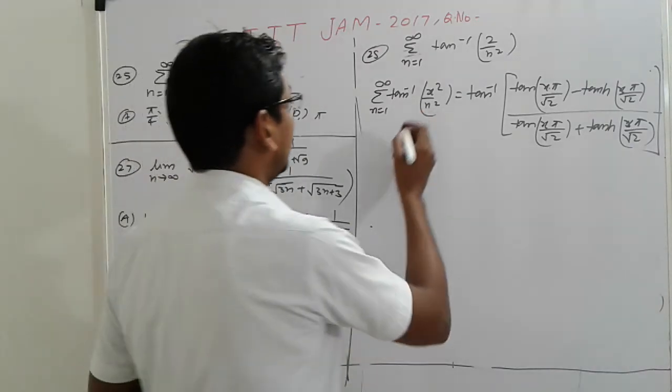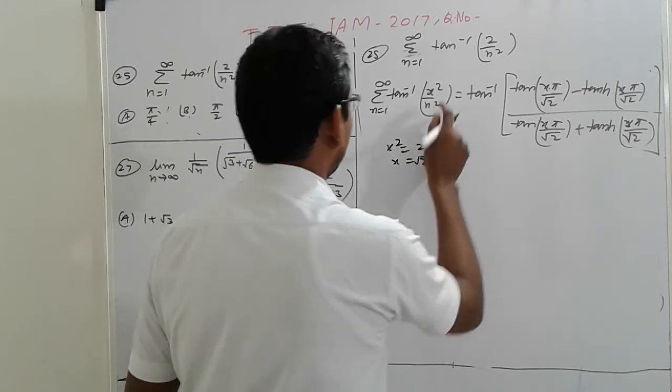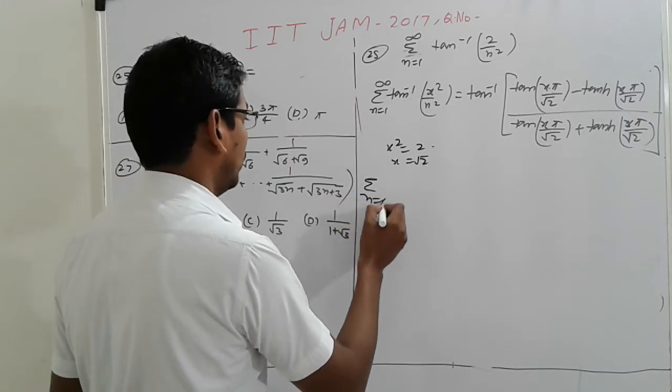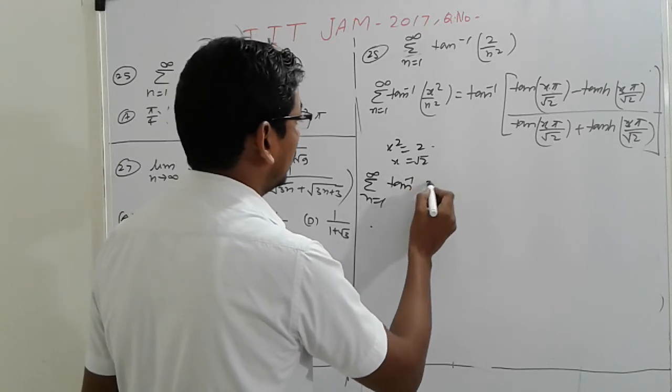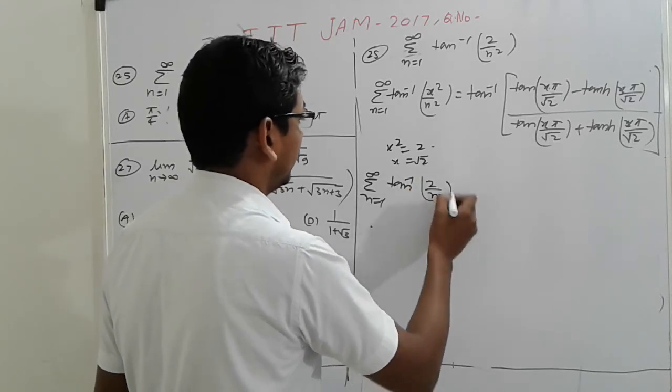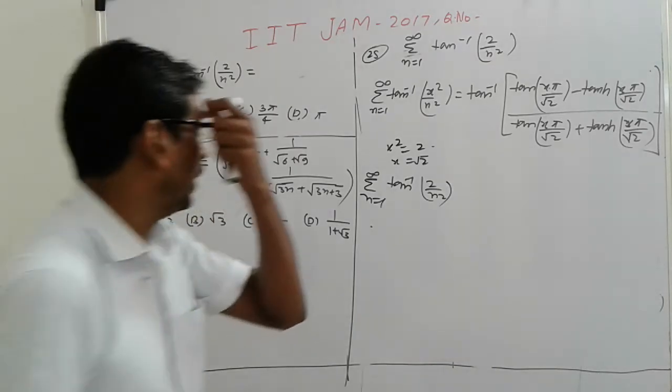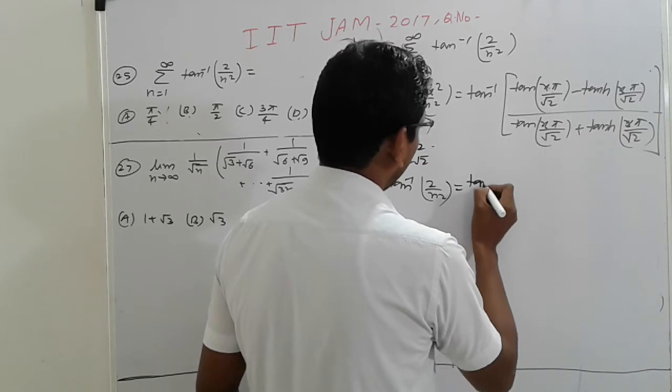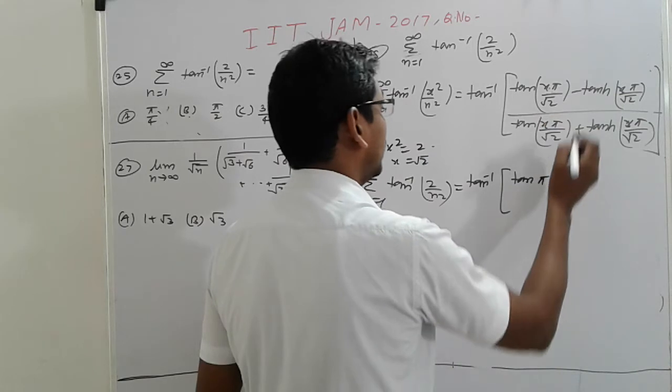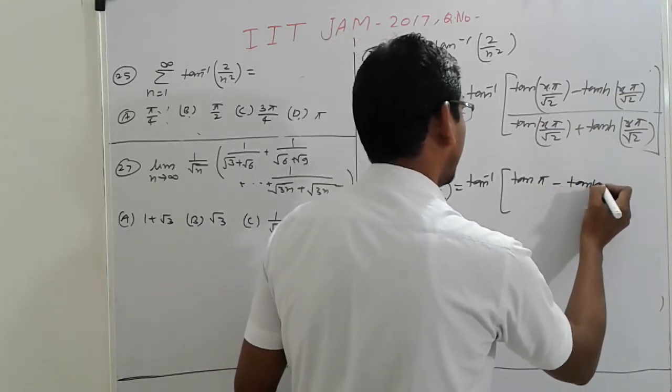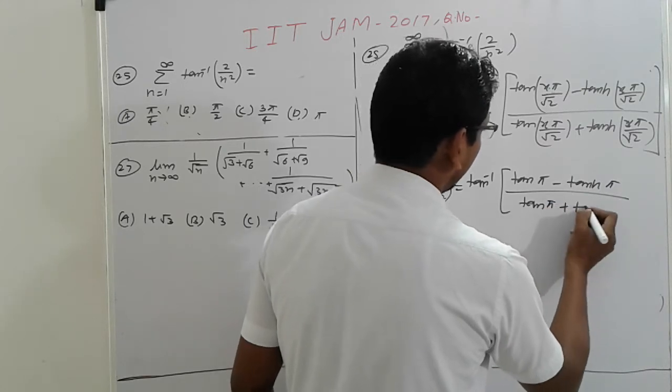So put x here: x square equal to 2, x equal to root 2. Put here and simplify. So this is tan inverse: tan pi root 2 root 2 cancel, minus tanh pi, here tan pi plus tanh pi.